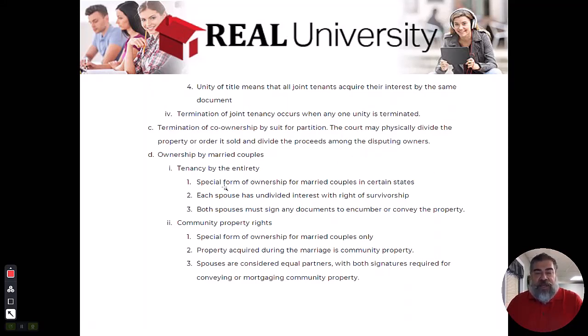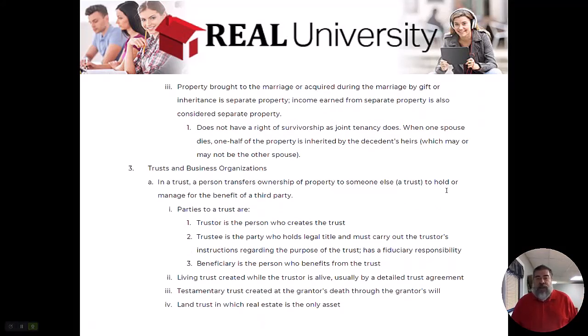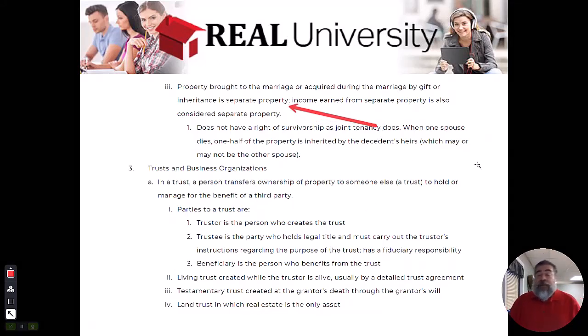Now, one of the other things that we had touched on was those states, there are some states that work as what they call individual states or separate property states. Separate property states, depending on what state you live in, Indiana is a separate property state. I believe Florida is. Well, there's actually only nine community property states. In your book, on page 54, there's a list. Arizona, California, Idaho, Louisiana, Nevada, New Mexico, Texas, Washington, and Wisconsin are what they call community property states.